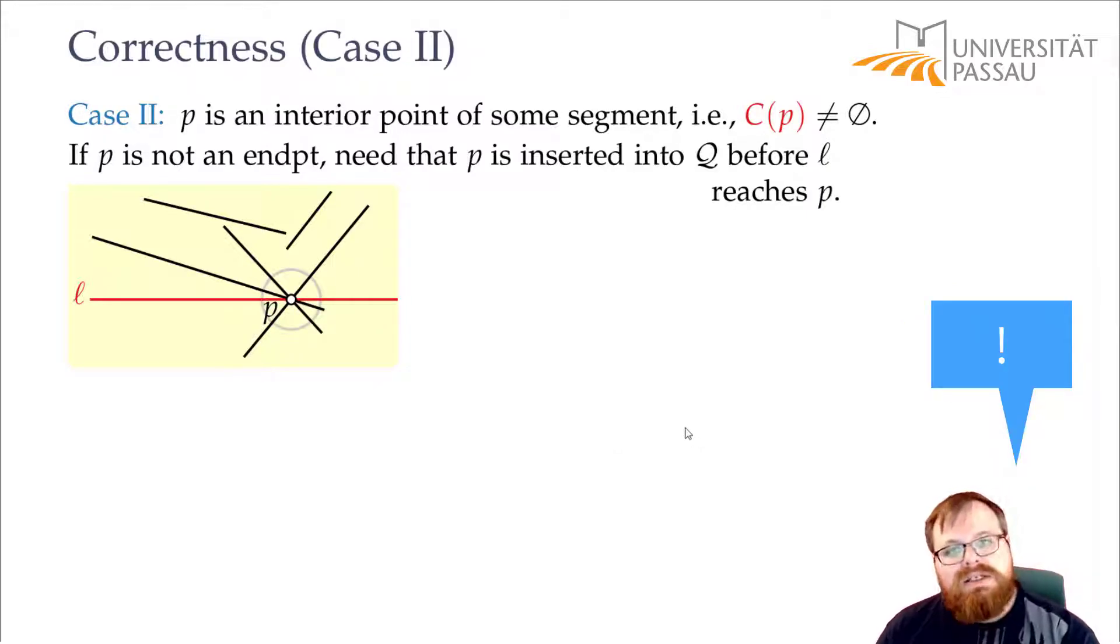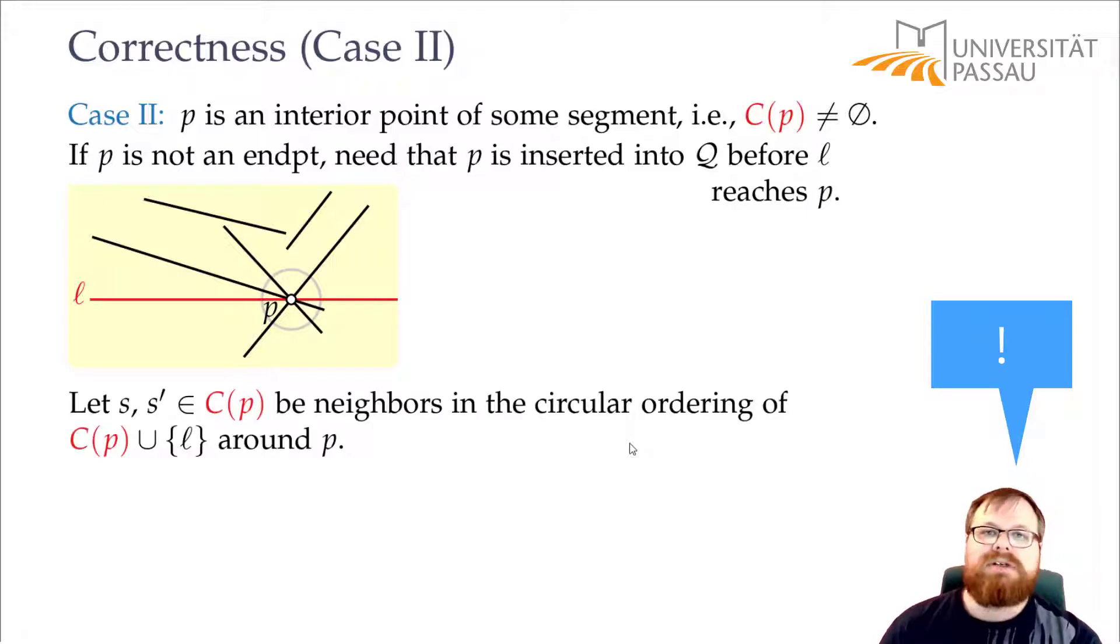Now how do we find out if P has ever been added to the queue? There are at least two segments that go through P. And we choose any two of them that are neighbors. For example here we can choose these two segments. They are neighbors in the circular order.